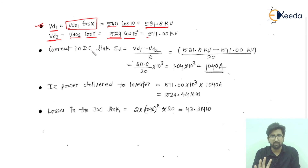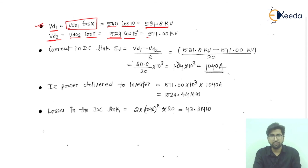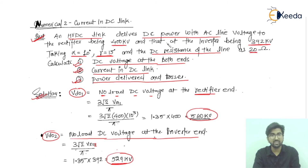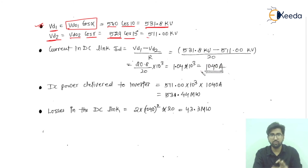The current in the DC link, I_D, equals (V_D1 − V_D2) / R. Substituting: V_D1 = 531.8 kV, V_D2 = 511.00 kV, and R = 20 ohms. After simplification, you get I_D = 1040 amperes.